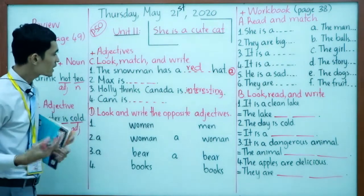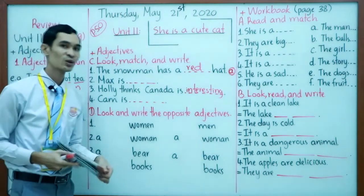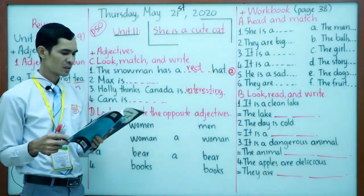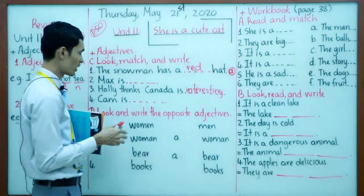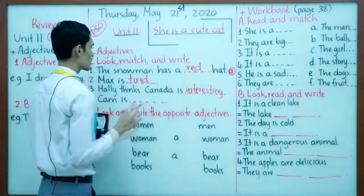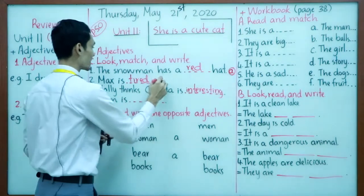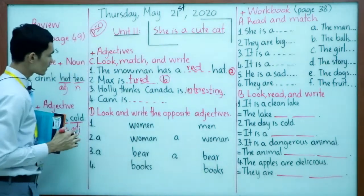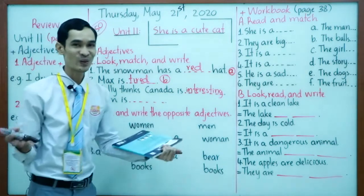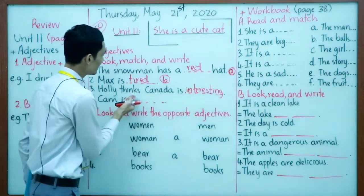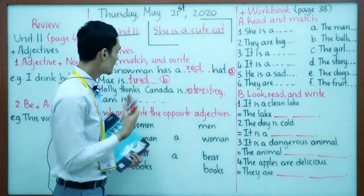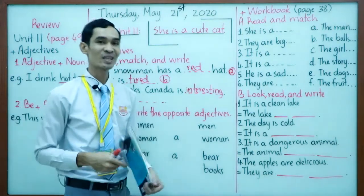How about number two? Mark is a dog. Look at Mark — he is tired. Look at his tongue sticking out. Tired — match two letters. Number three, I wrote for you already: Holy things — Canada is interesting. Match two letters, letter C. Look at the picture.